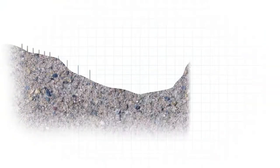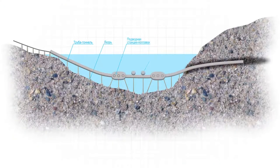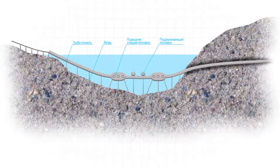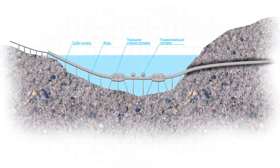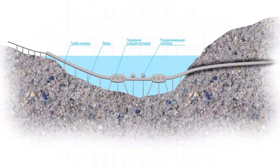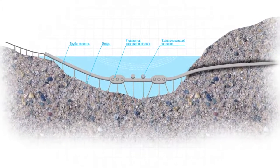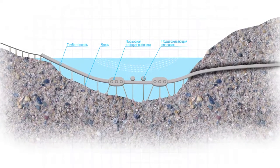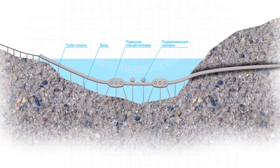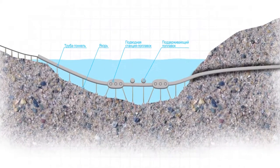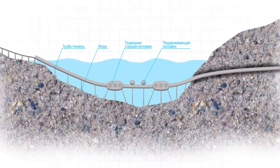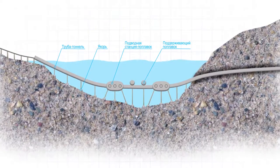On the sea section, the SkyWay track may be placed in the air ducts of a tunnel made with zero buoyancy and placed at a large depth with the aim of protection from sea forces. At such depth, there is also no effect of destructive storms.